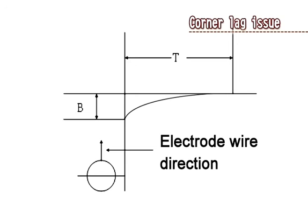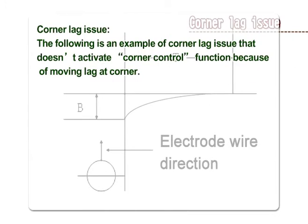Corner Lag Issue: The following is an example of a corner lag issue that occurs when the corner control function is not activated, due to moving lag at corners. The possible solutions are as follows.